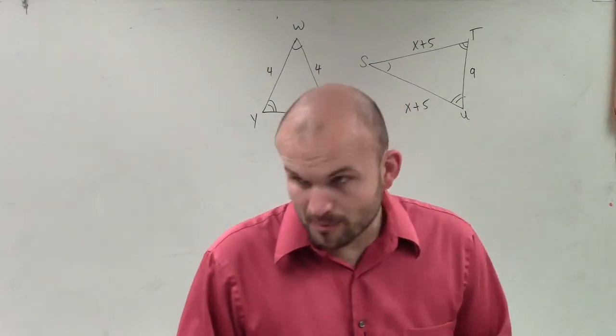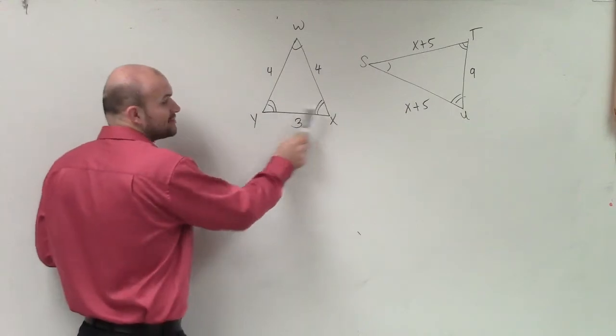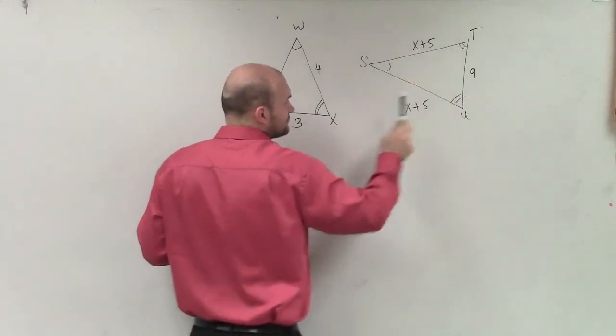To do that, we need to set up a proportion. Now, notice this is an isosceles triangle because these two angles are equal, and these two sides are equal.